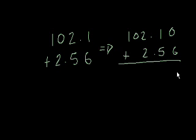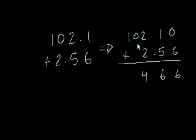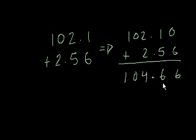0 plus 6 is 6. 1 plus 5 is 6. 2 plus 2 is 4. 0 plus nothing is 0. 1 plus nothing is 1. Bring down that decimal point — 104.66.